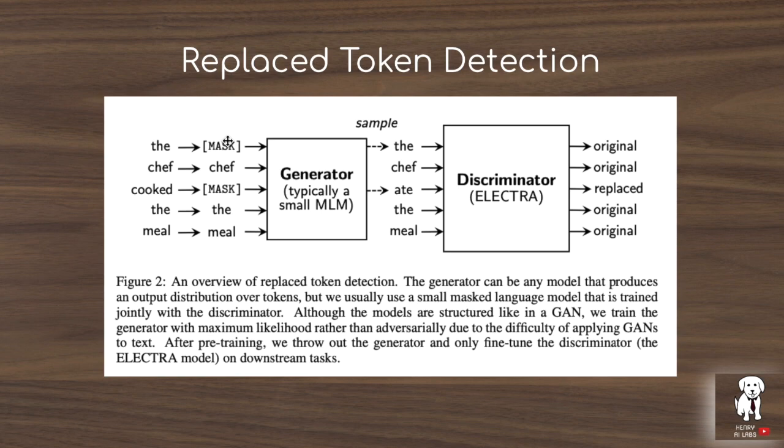ELECTRA is different because it couples the generator with a discriminator, similar to the generative adversarial network framework. The discriminator is going to predict which of the tokens come from the original input sequence and which have been changed by the generator network.